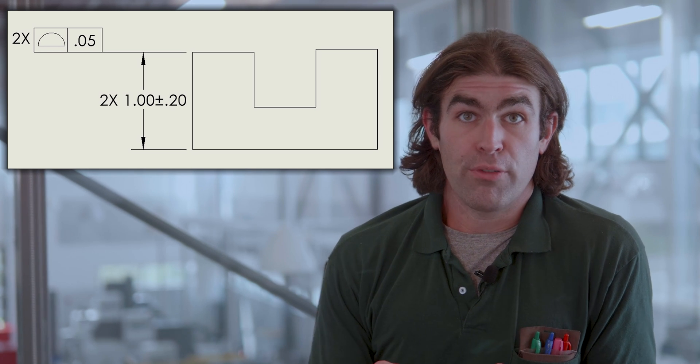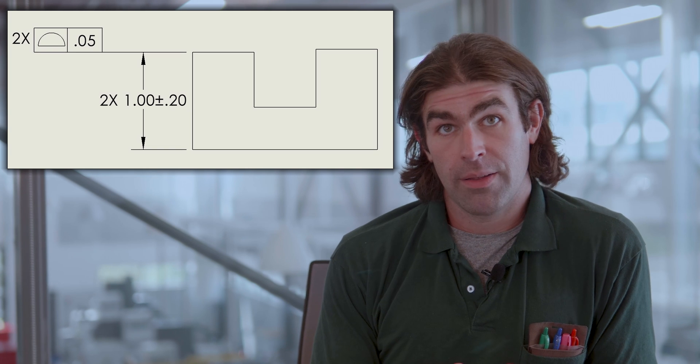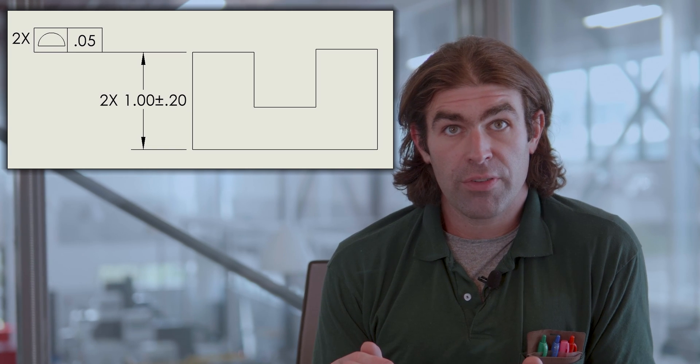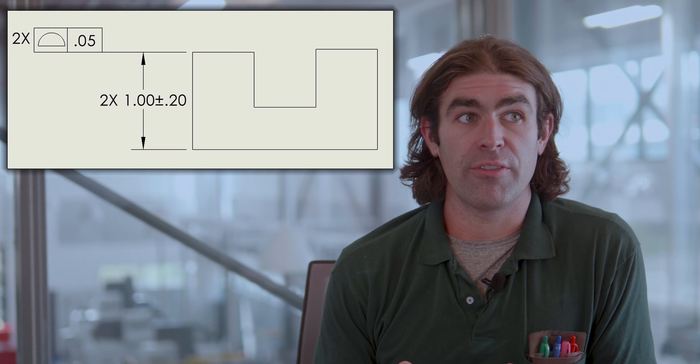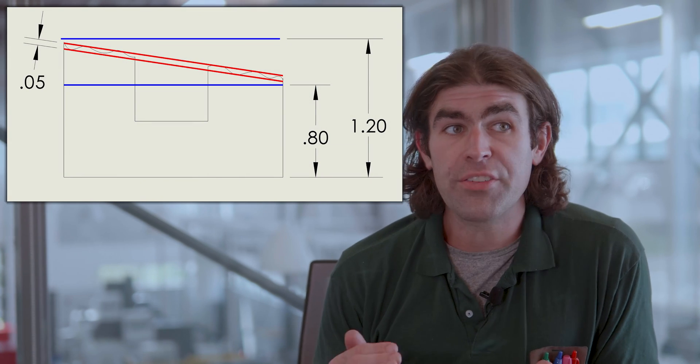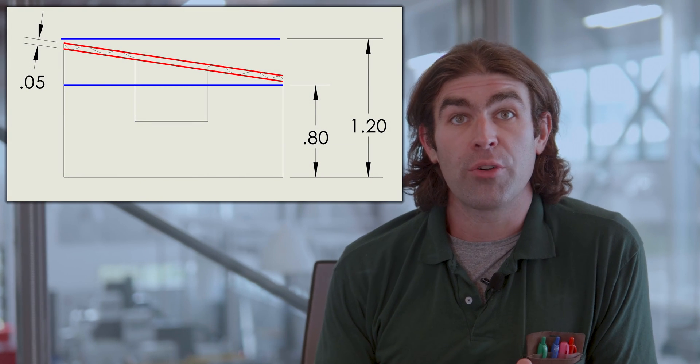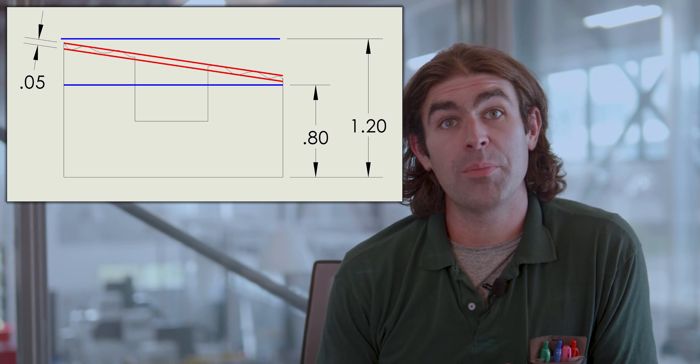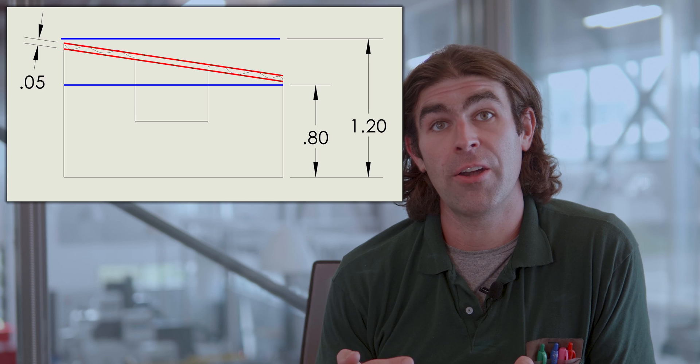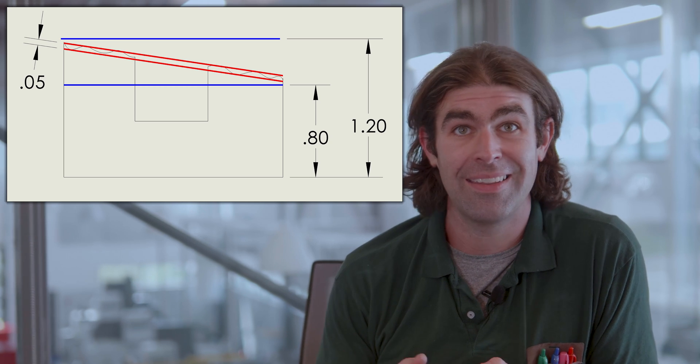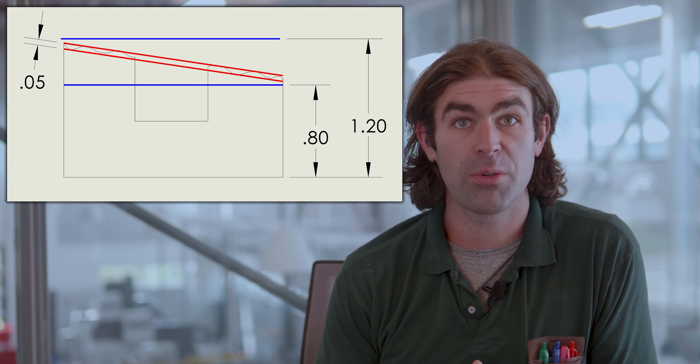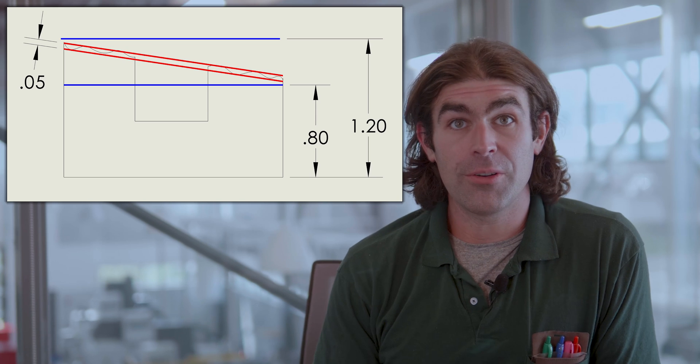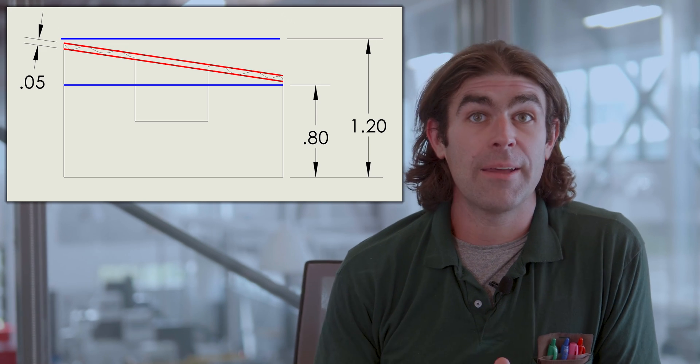So all the profile is doing is controlling the flatness of the surfaces and the coplanarity of the surfaces. As you can see in the figure, the surfaces can be in a lot of different places in that tolerance band, but they have to be coplanar to each other within that profile tolerance. We're refining it but still have a lot of latitude for that surface.